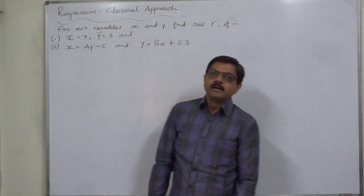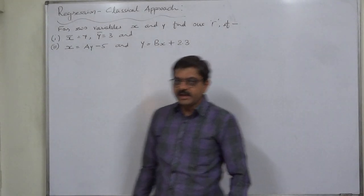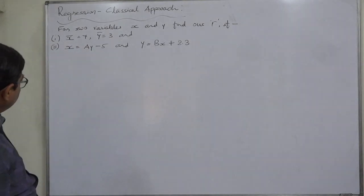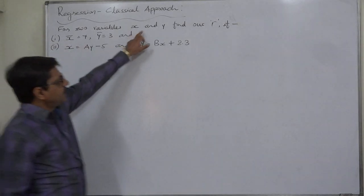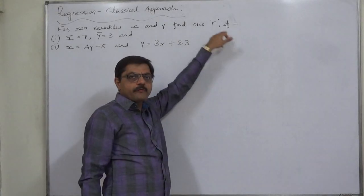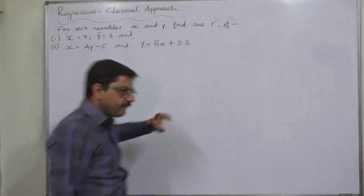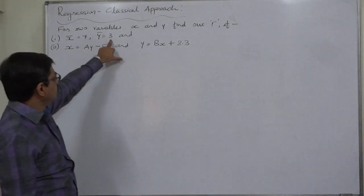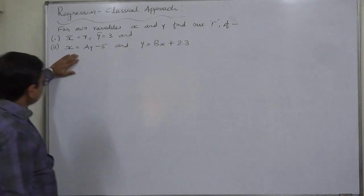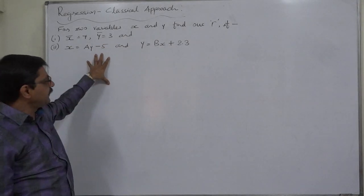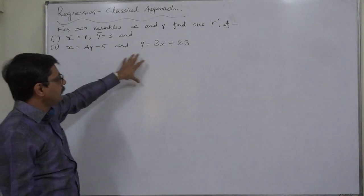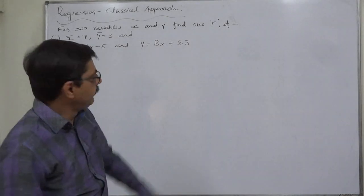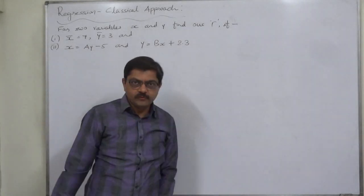Hello and welcome back. New case in regression — linear regression. The case is: for two variables x and y, find out the coefficient of correlation if x-bar equals 7, y-bar equals 3, and x equals ay minus 5, and y equals bx plus 2.3. We need to find out the coefficient of correlation.